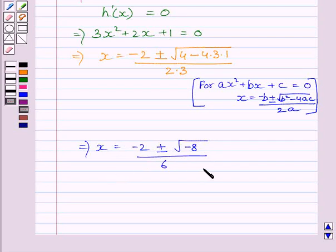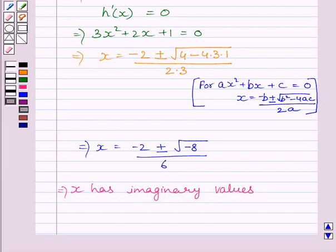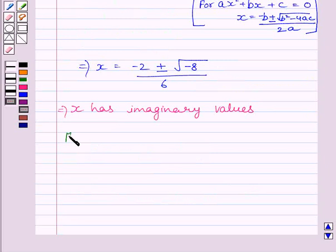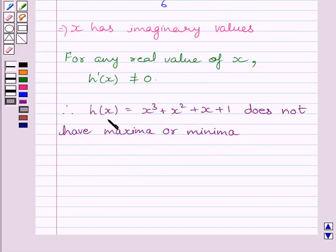This implies x has imaginary values. For any real value of x, h dash x is not equal to 0. So our required answer is h(x) equals x cube plus x square plus x plus 1 does not have maxima or minima.